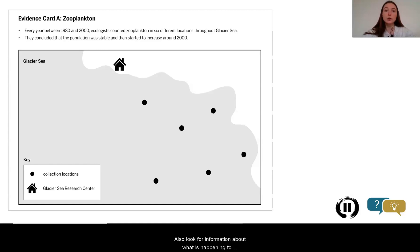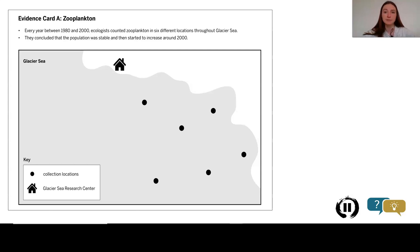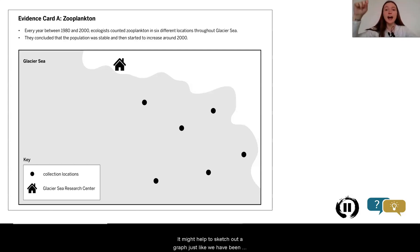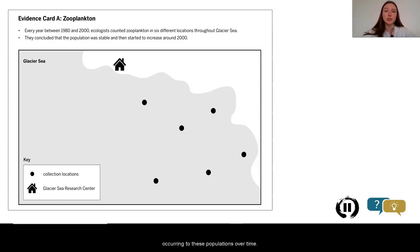Remember that our evidence criterion for population sampling is that the samples represent as much of the whole as possible. Also, look for information about what is happening to the populations based on the evidence. It might help to sketch out a graph just like we have been doing for the moon jellies to give you a visual of what is occurring to these populations over time.